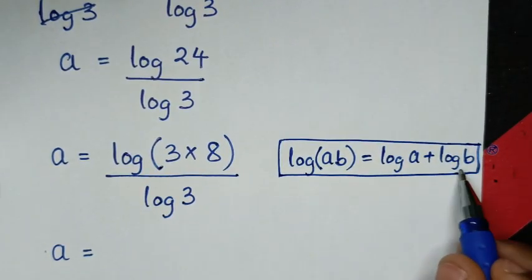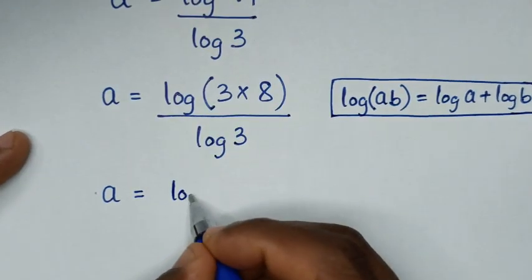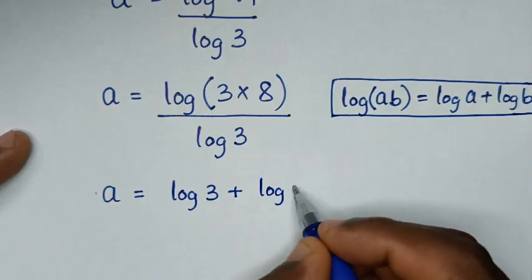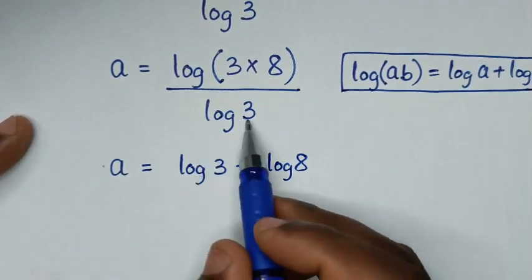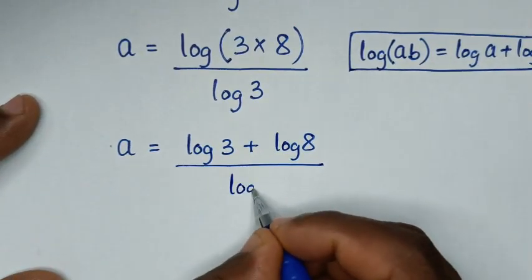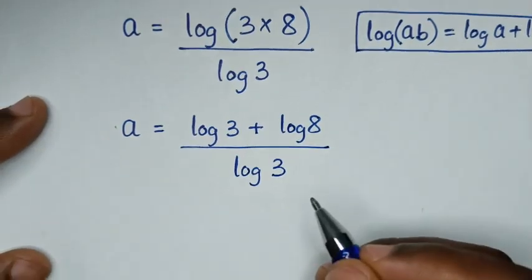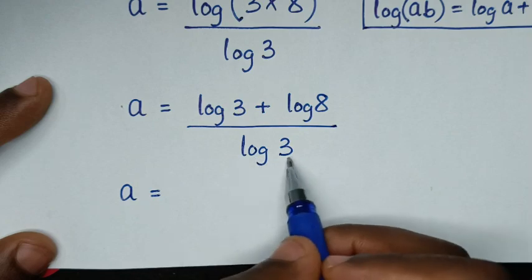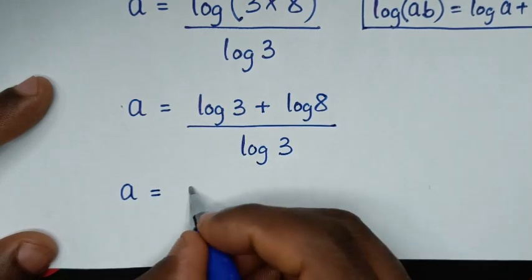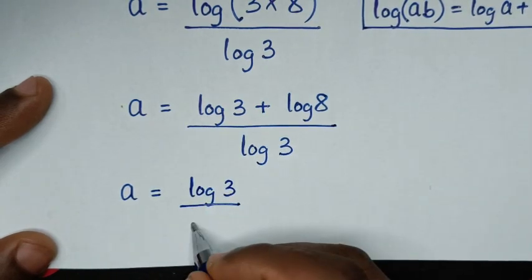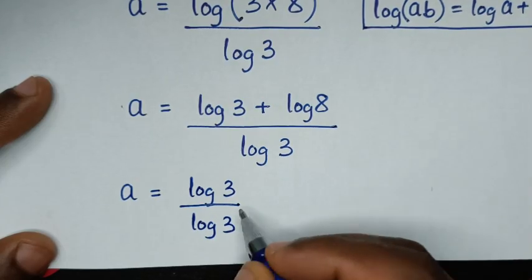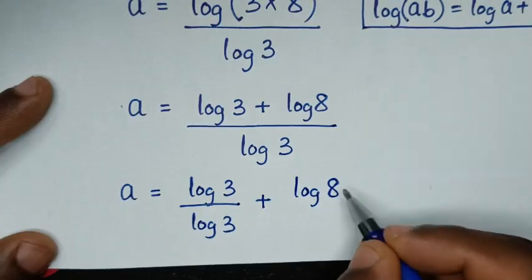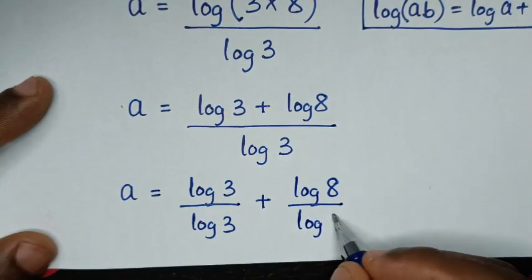So by applying this form here, it will be log of 3 plus log of 8, all over log of 3. Then in the next step, it will be a is equal to log of 3 over log of 3, plus log of 8 over log of 3.